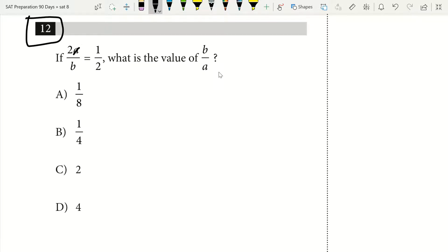If I put in a 1 for a, then I'm going to have to put in a 4 for b, right, because 2 over 4 is equal to 1 half. So at that point, I know that a is equal to 1 and b is equal to 4. 4 over 1 then is going to equal 4, and my correct answer is going to be D.